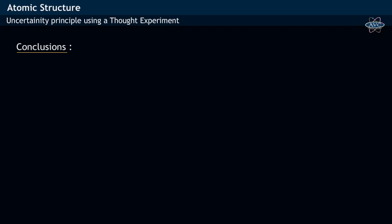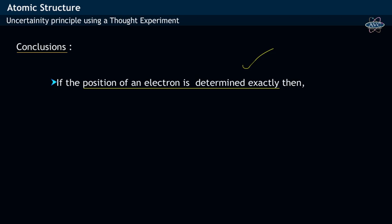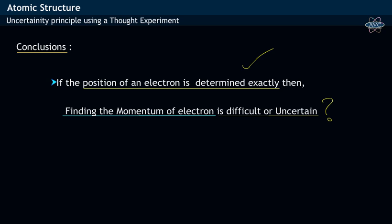From this thought experiment, Heisenberg has concluded that if the position of an electron is determined exactly, then finding the momentum of an electron would be uncertain or difficult.